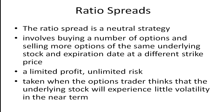I want to continue my discussion of option strategies by talking about ratio spreads and ratio back spreads. A ratio spread is a neutral strategy, meaning you're not expecting the price to rise or fall significantly. It involves buying a number of options and then selling more options of the same underlying stock and expiration date but at a different strike price. It has limited profit but unlimited risk, and it's taken when the options trader thinks the underlying stock will experience little volatility in the near term — so it's going to hover around its current price.